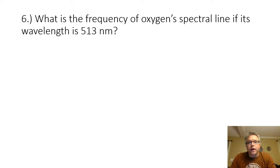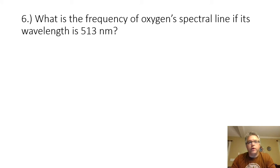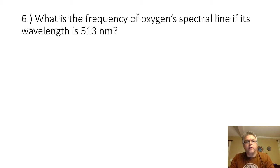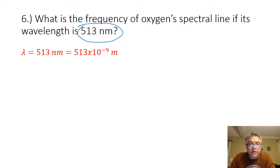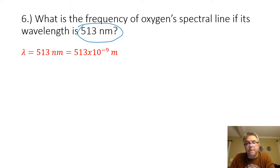What is the frequency of an oxygen spectral line if its wavelength is 513 nanometers? In this problem, we are given the wavelength of oxygen, which is 513 nanometers. Because that is in nanometers, I need to convert to meters. So 513 nanometers converted to meters will be 513 times 10 to the minus ninth meters.